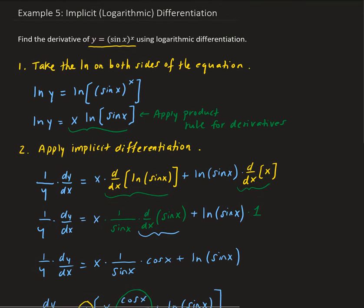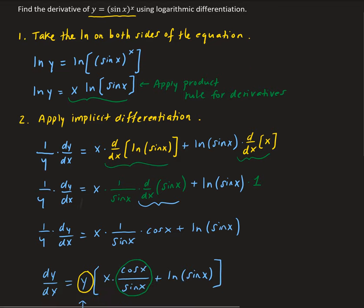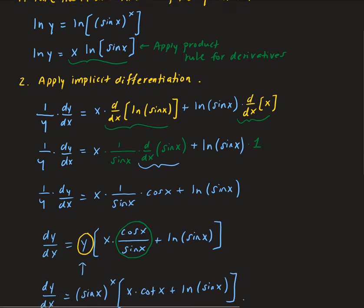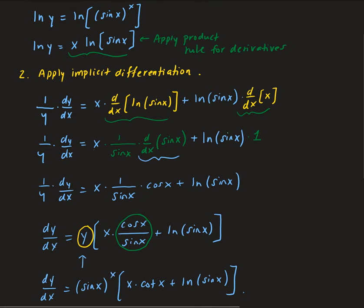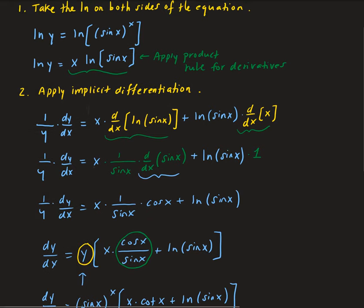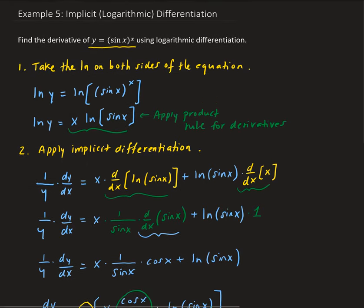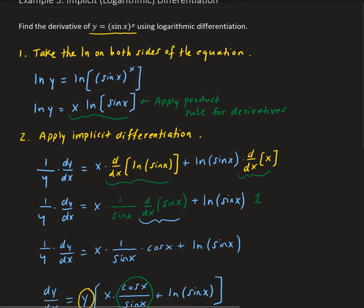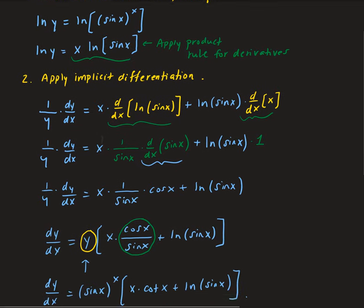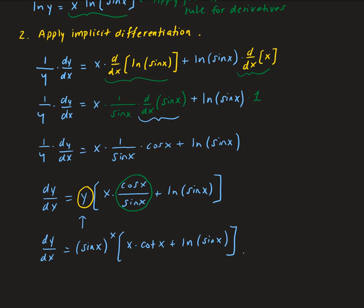To summarize: the first step is to take the natural log on both sides of the equation, which allows us to bring down the x. Then we apply implicit differentiation on both sides. Next, we multiply both sides by y, and replace y with the original function in terms of x. That gives us our final result.